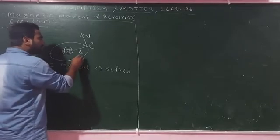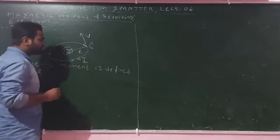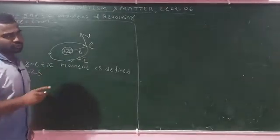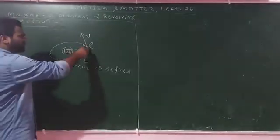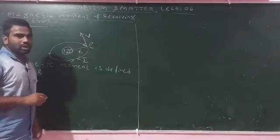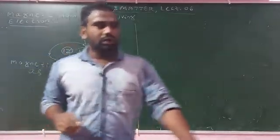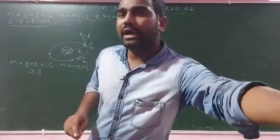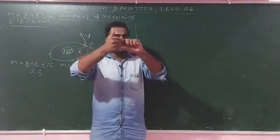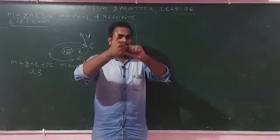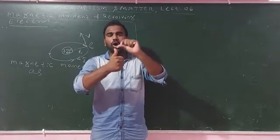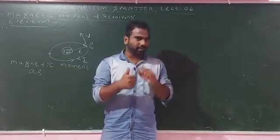The direction of the current is opposite to the direction of the electrons. Now we have to apply the Right Hand Thumb Rule. If we curl the fingers in the direction of the current, the thumb gives the direction of the magnetic moment.